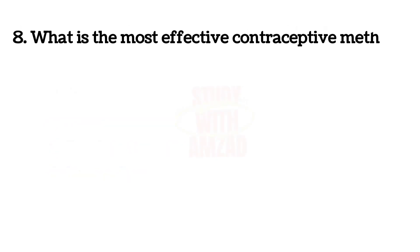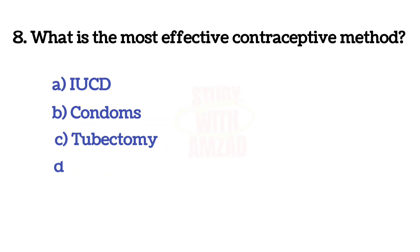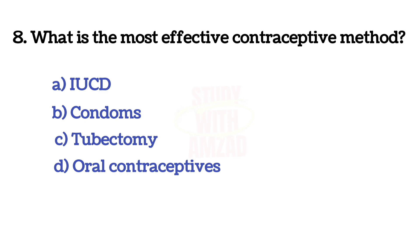What is the most effective contraceptive method? The correct answer is C: Tubectomy.